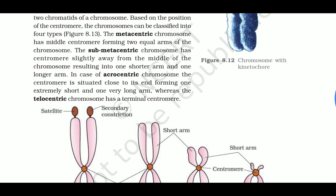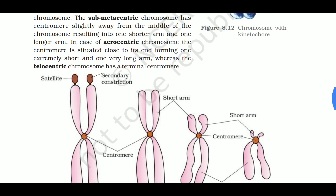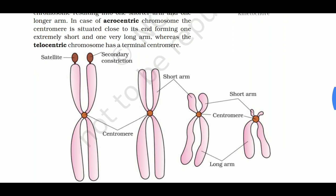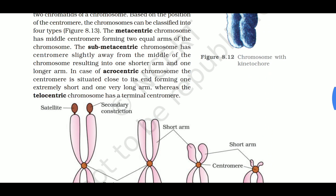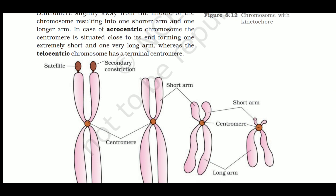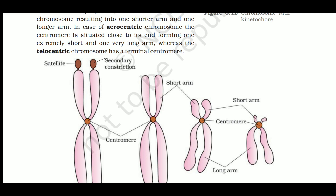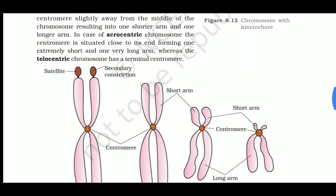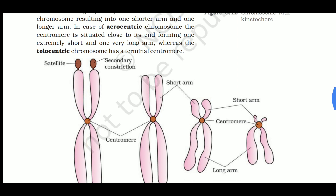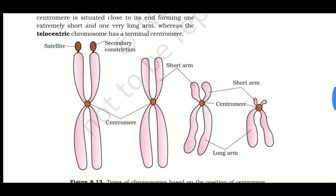Based on the position of the centromere, chromosomes are classified into four types. Metacentric chromosome has the centromere exactly in the middle, forming two equal arms. Submetacentric chromosome has the centromere slightly away from the middle, resulting in one short arm and one longer arm. Acrocentric chromosome has the centromere situated close to the end, forming one extremely short and one extremely long arm.